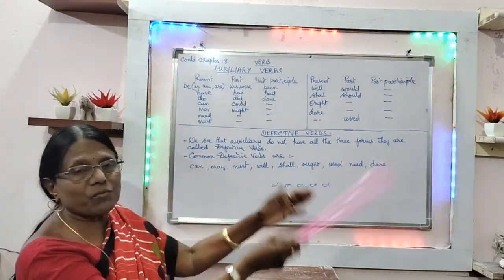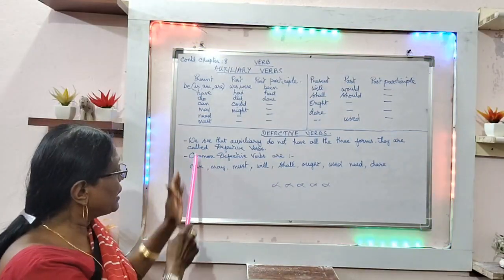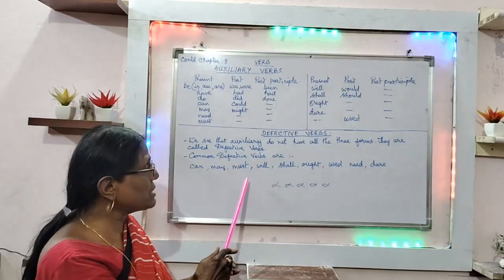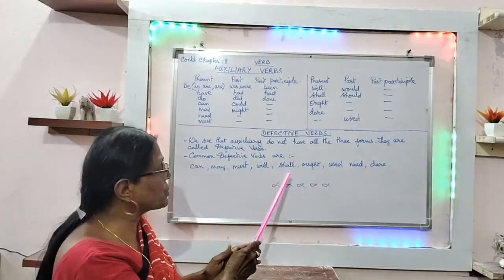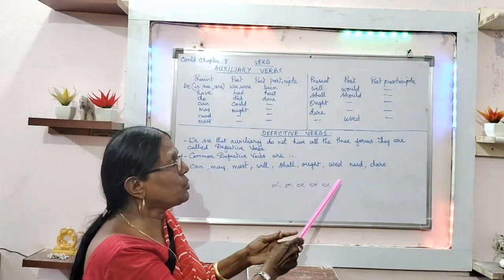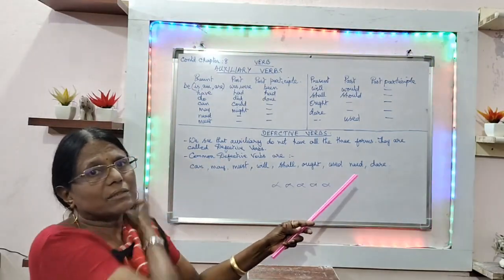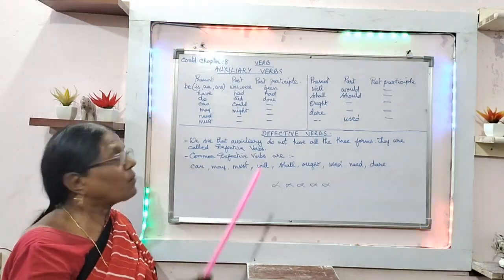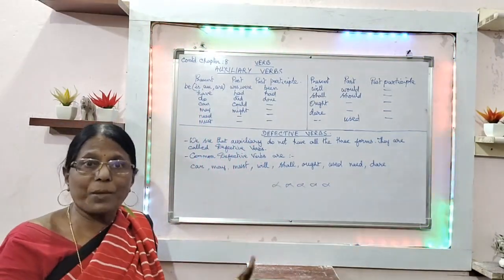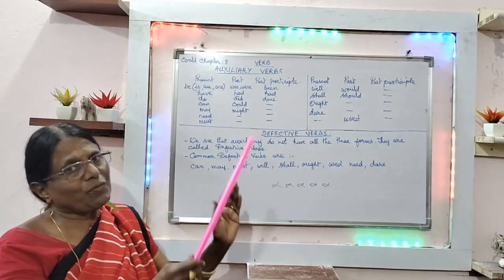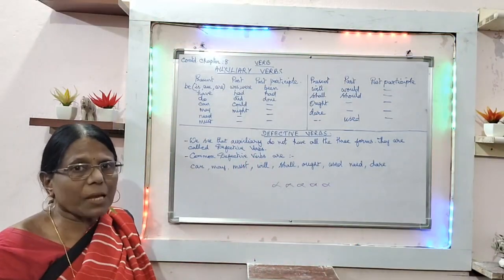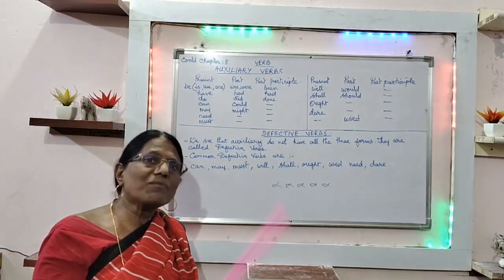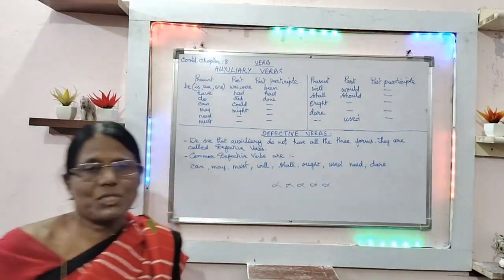Under the common defective verbs, the following are coming under this category: can, may, must, will, shall, ought, used, need, and dare. So these are all called defective verbs. With this we conclude the topic of verb, and next we may go to the next chapter. We shall continue tomorrow. Thank you and have a very good day.